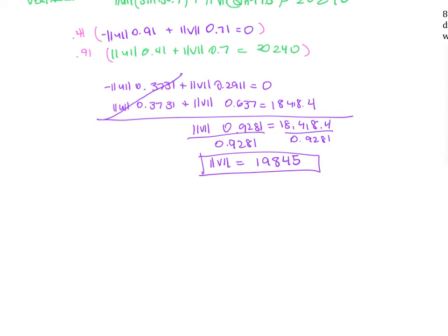Now to solve for U, you just plug in the V. So I plugged it into the bottom, I plugged it into here on the original. Magnitude of U of 0.3731 plus 19,845, and I actually had 0.3, so I'll put that there, times 0.637 equals 18,418.4. Then you solve for all of that, and so the magnitude of U, if I did all my calculations correctly on my calculator, it's approximately 15,483.7.